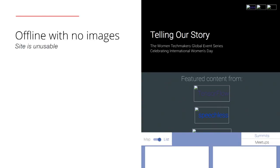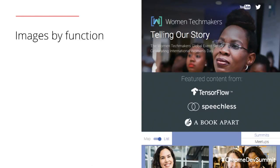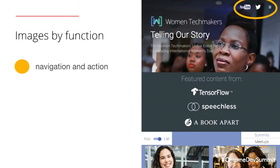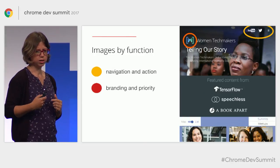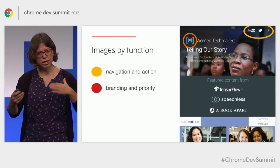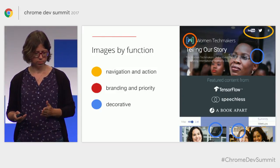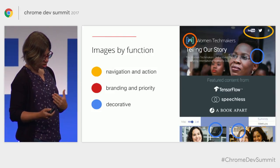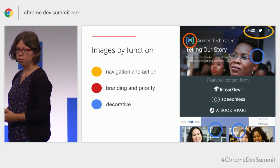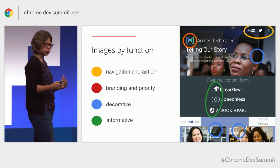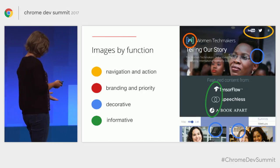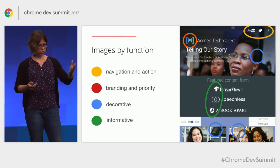I started to look at the images on that site by function. The yellow ones I call navigation and action — they're super important; without them, the user can't really properly use the site. The red ones are branding and priority — images that I as developer or business owner really care about, used to create connection with my audience. The blue ones are the opposite of the red ones — they're decorative; it's nice they're there, but if they're missing, they don't really break the site. And informative images are quite interesting because they look nice but also convey some meaning — they're like semi-important. Now that I understand the structure of my images on the page, I can apply different strategies to those.